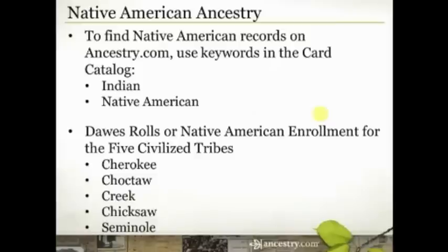Let's talk about those enrollment cards. They're called the Dawes Rolls most frequently, because that's the congressman who was responsible for seeing that this occurred. The official name is the Native American Enrollment for the Five Civilized Tribes. The five civilized tribes, as they were called, are Cherokee, Choctaw, Creek, Chickasaw, and Seminole. So if you have ancestors you suspect might be from one of those five tribes, the Dawes Rolls are the go-to place to determine their tribal enrollment.